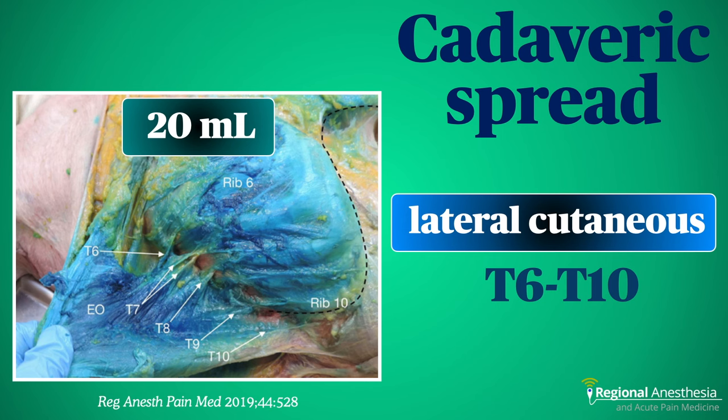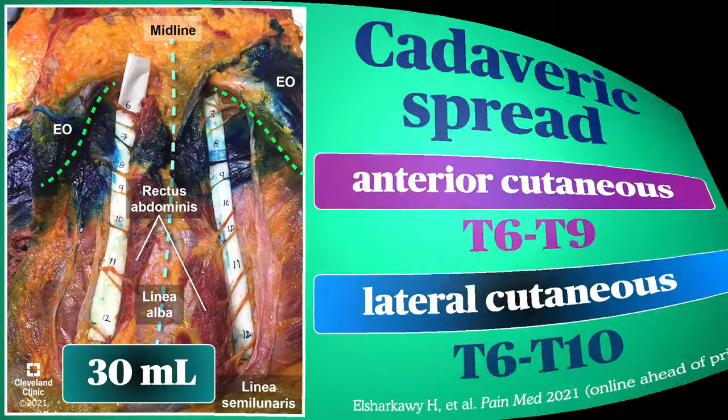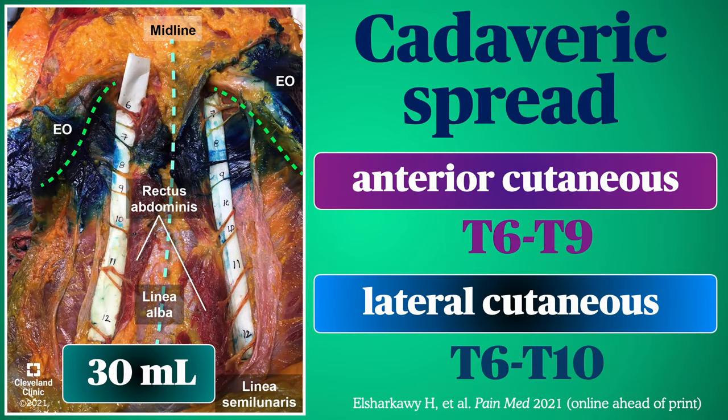Here's what that spread looks like in a cadaver. 20 mls of dye extensively covers the anterior lateral chest and definitely knocks out the lateral cutaneous branches of T6 through T10. In this cadaver experiment, 30 mls of injectate was used, and you can clearly see that not only do we get the lateral cutaneous branches, but there is intense staining of the upper anterior cutaneous branches and dye within the rectus sheath, with consistent blockade of T6 through T9 or T10.